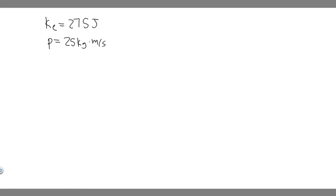In this problem, we're told an object has a kinetic energy of 275 joules and a momentum of magnitude 25 kg meters per second. Find A, the speed, and B, the mass of the object.